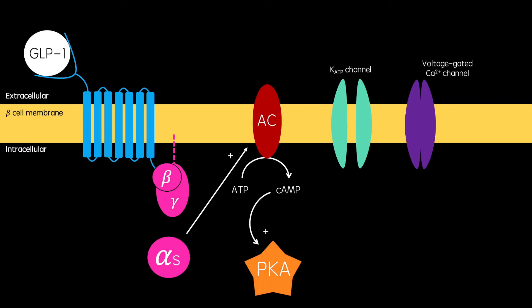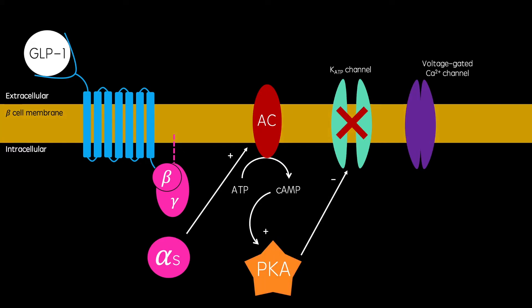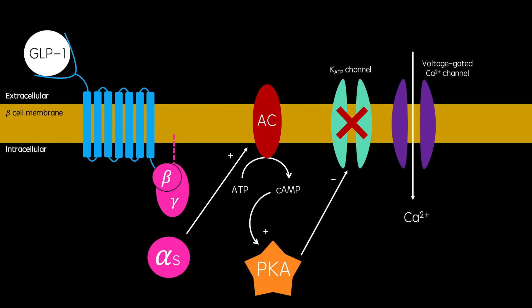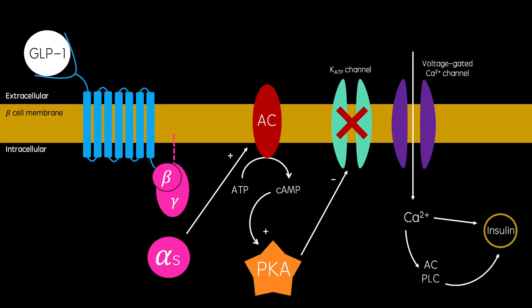Protein kinase A blocks ATP-dependent potassium channels, causing the beta cell membrane to depolarise. This depolarisation activates voltage-gated calcium channels, causing an influx of calcium. Calcium then stimulates the exocytotic release of insulin.